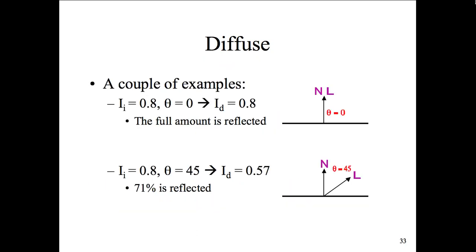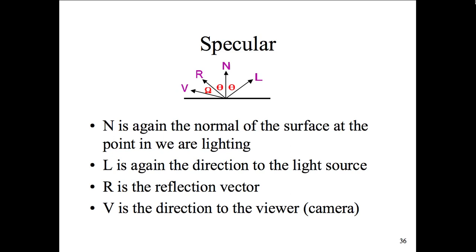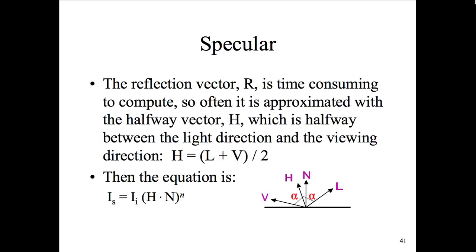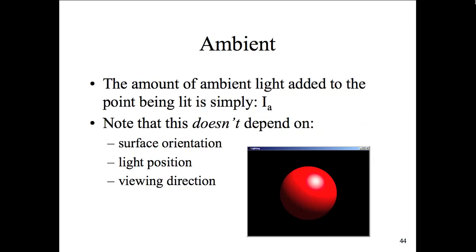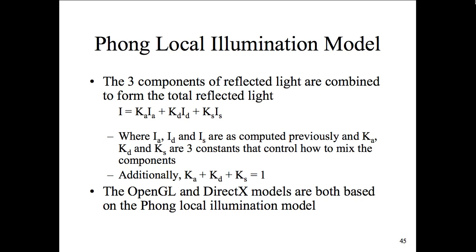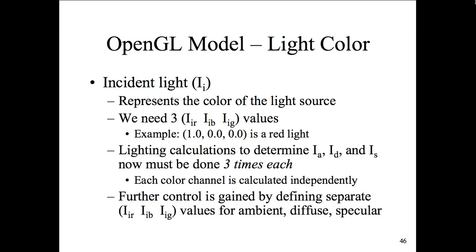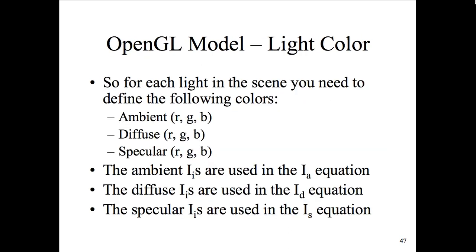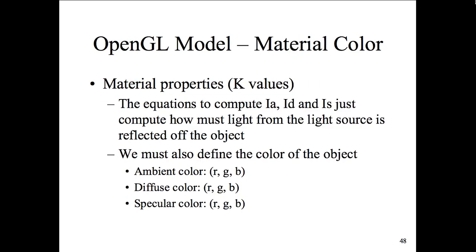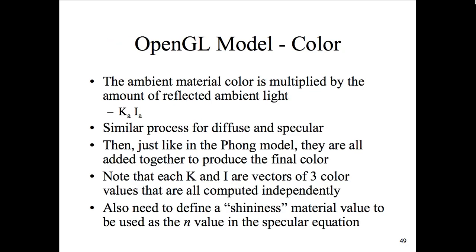We looked at diffuse lighting, specular lighting, and ambient lighting. We defined illumination models — not to be concerned with the calculations going into the definitions unless you're implementing your own language system to work with color and lighting concepts. Incident lighting as a light color, and then color itself — OpenGL models for ambient, diffuse, and specular. Basically, color and lighting are similar in concept, but we have material color for different types of surface effects.